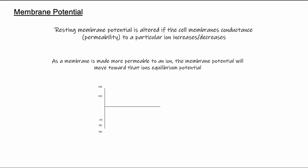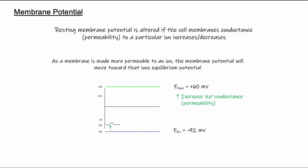As the membrane is made more permeable to an ion, the membrane potential will move toward that ion's equilibrium potential. Sodium's equilibrium potential is positive 60, so increasing sodium conductance causes the resting membrane potential to move toward positive 60 — shown by the green arrow indicating open sodium channels. Similarly, increasing potassium permeability causes the membrane potential to move toward potassium's equilibrium potential.